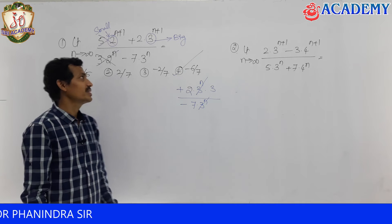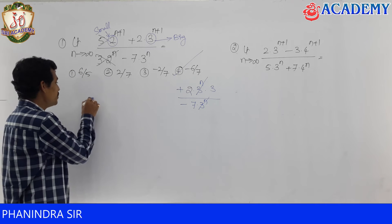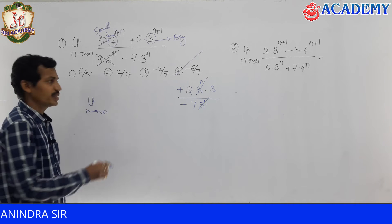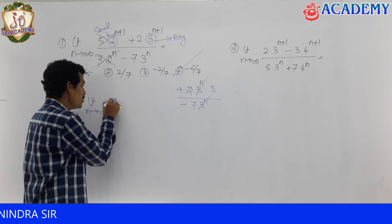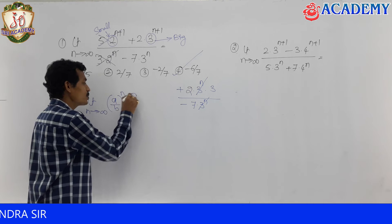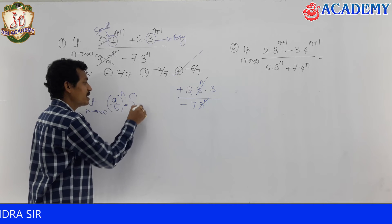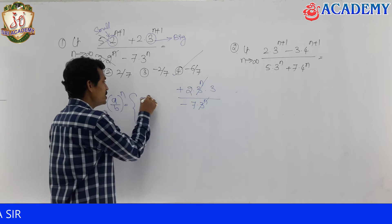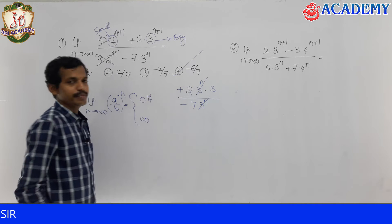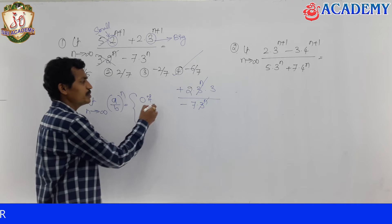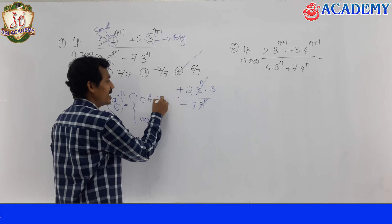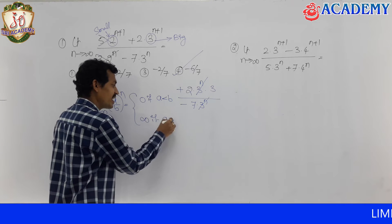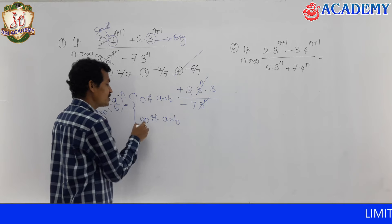Now we will see the formal procedure to solve this problem. We use the condition: limit as n tends to infinity of (a/b) to the power n equals zero when a is less than b, and equals infinity when a is greater than b. Based upon the base comparison you get your answer.